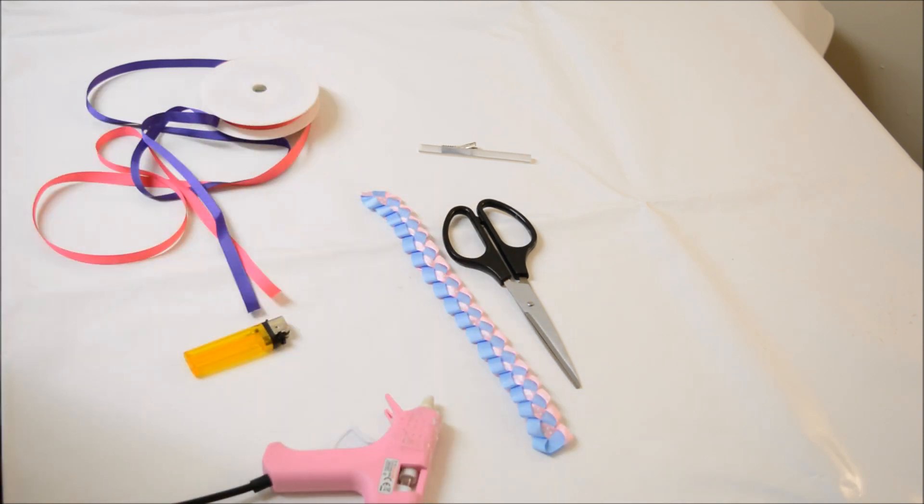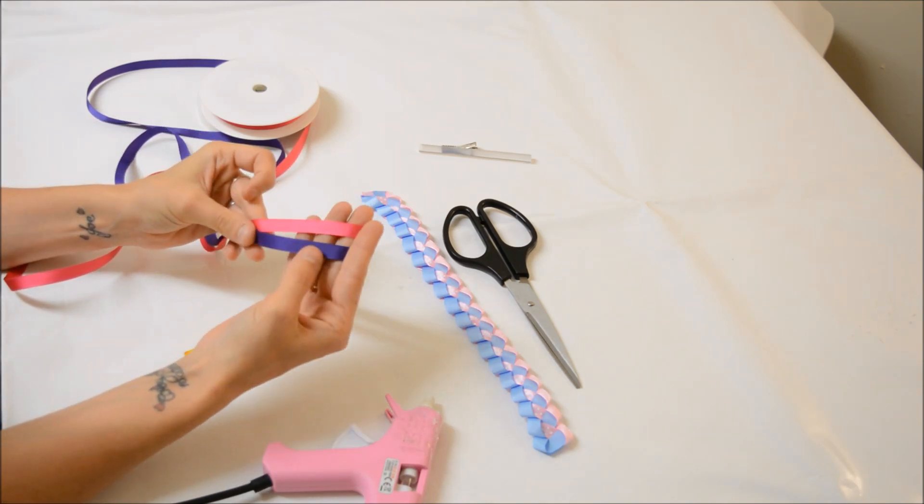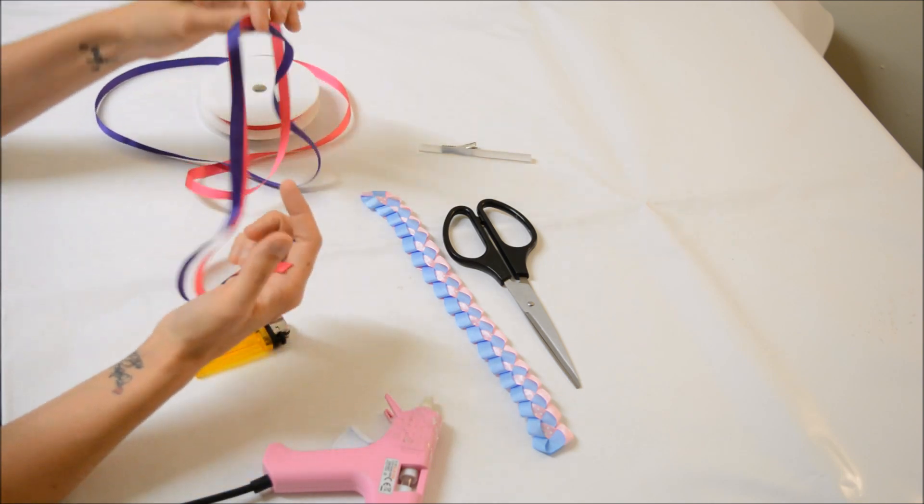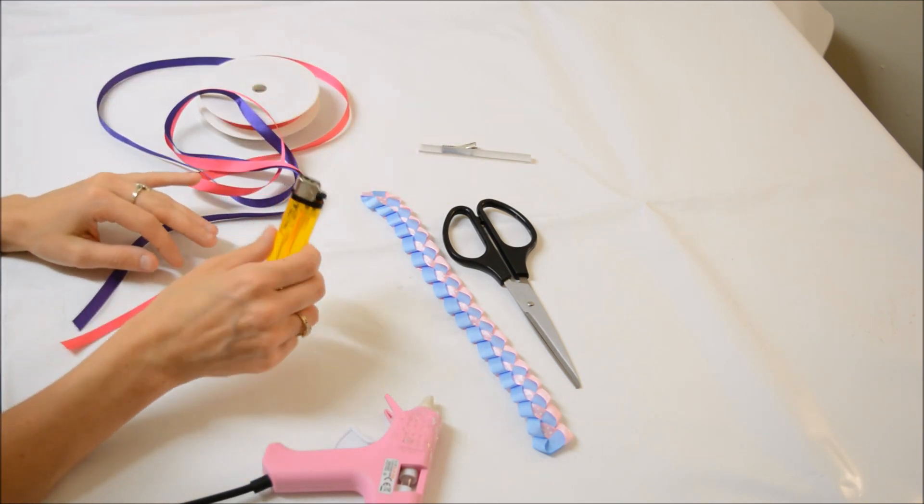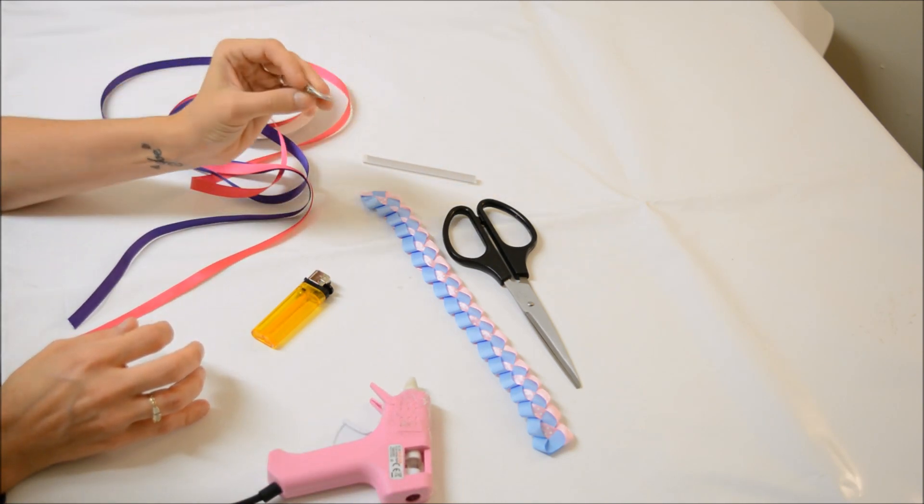For this tutorial you will need two 10mm width ribbons. I've chosen two different colors but you don't have to, you could use the same. A lighter, a glue gun, and a clip.